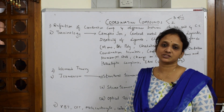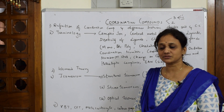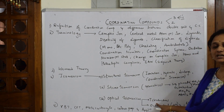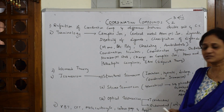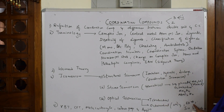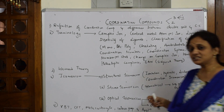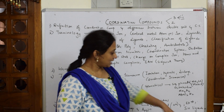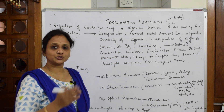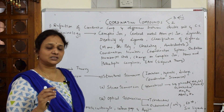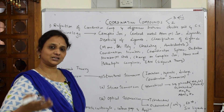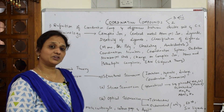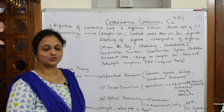Then we'll learn optical isomerism, where you need to know the concepts of enantiomers and diastereomers. You'll be given a complex and asked to write its enantiomeric form and show its diastereomeric form. I'll also cover tetrahedral and octahedral complexes, and show how EDTA — a chelating ligand — is linked and how to write its enantiomer.